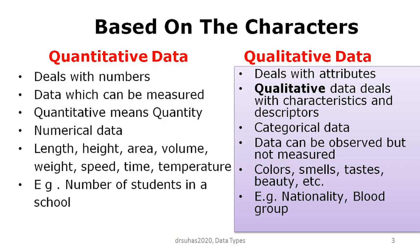Qualitative data are those which can be expressed in terms of characters or attributes — descriptors. When you are describing somebody as beautiful, fair, or hardworking, those are qualitative data. They are also called categorical data because we are classifying them into categories. These data are more often observed rather than measured — they can be expressed through observation rather than measurement.